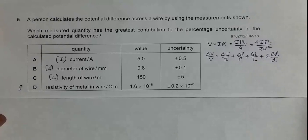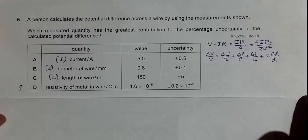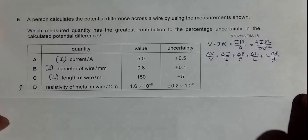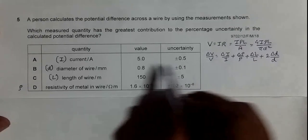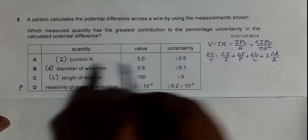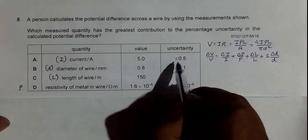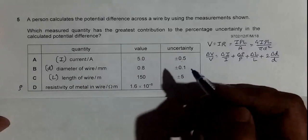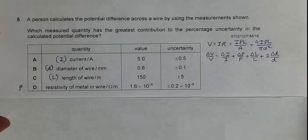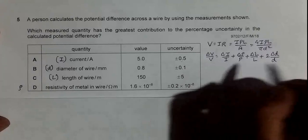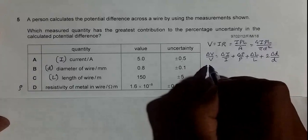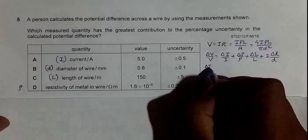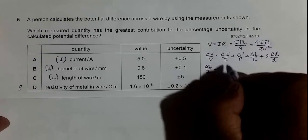Now if we calculate these things individually, this is ΔI this is I, so ΔI by I will be 0.5 divided by 5 which will ultimately come out to be equal to 0.1. So ΔI by I will be equal to 0.1, if I convert into percentage it will be 10%.